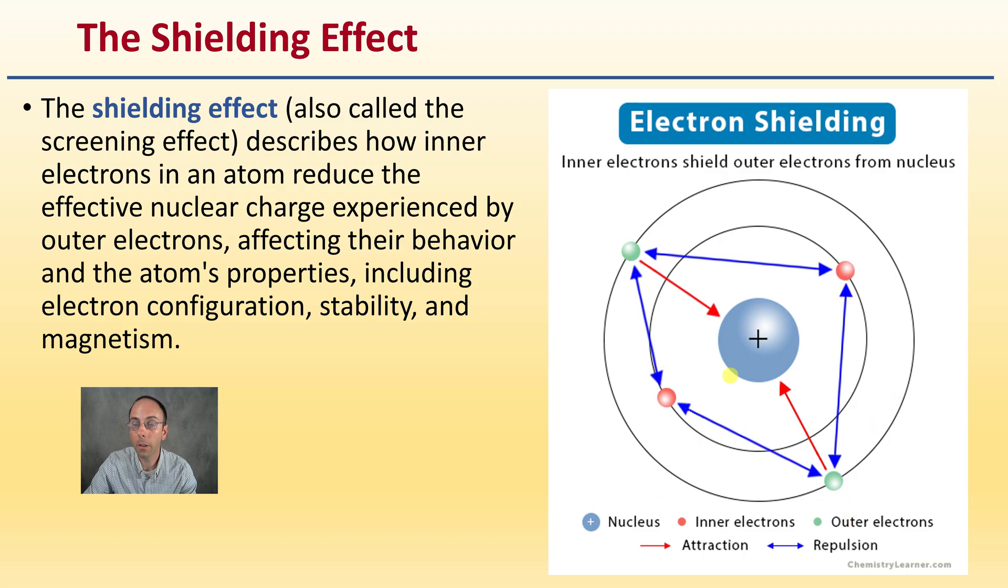We've got our inner electrons, outer electrons, and nucleus. We can see how these electrons are attracted to the positive charge of the nucleus and repelled from one another. This whole interaction occurring in three-dimensional space is causing the shielding effect with those electrons as it relates to the positive force of the nucleus.